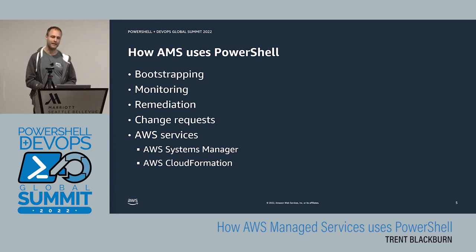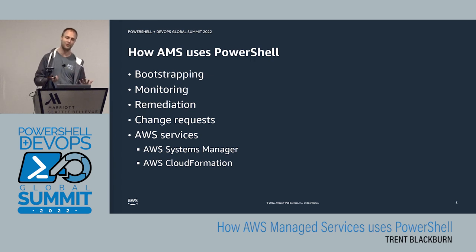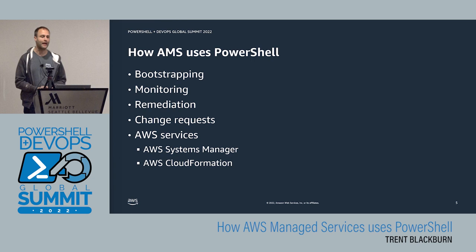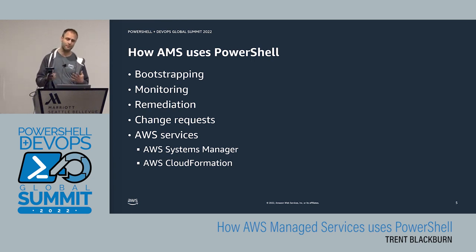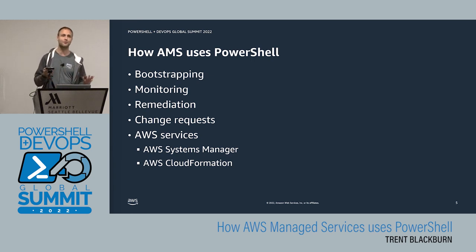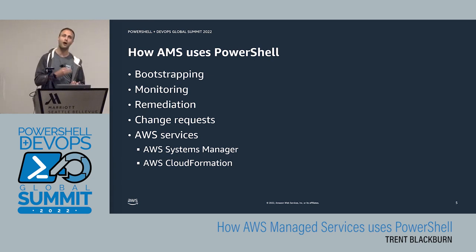One of the big pillars of AMS is reducing what's called undifferentiated heavy lifting. Everybody has to patch, everybody has to monitor, alarm, alert, manage and configure infrastructure — and nobody really likes doing that. You want to focus on what your business actually provides to your customers. We also do a lot of work with change requests in general, including those specific to Windows. We use PowerShell to configure any AWS infrastructure we launch and for ongoing monitoring.